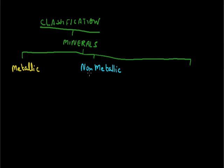Similarly, the next one is non-metallic minerals. Non-metallic minerals do not consist of any metals. They are semi-solid, liquid, and even in gaseous forms. Like petroleum, natural gases, and salt — they are all non-metallic minerals. The third type is energy minerals, or power minerals, meaning only those minerals from which we get electricity or power. Examples are coal, petroleum, and natural gas.